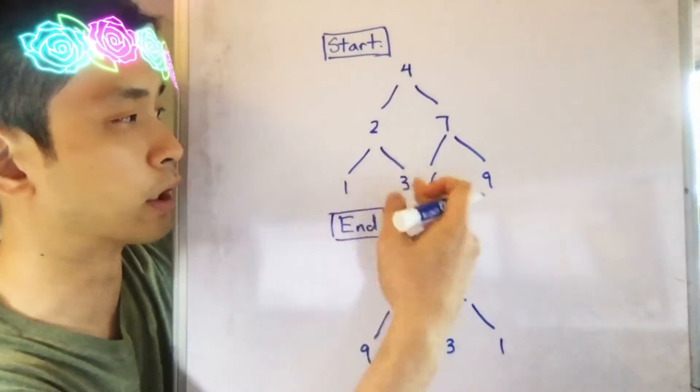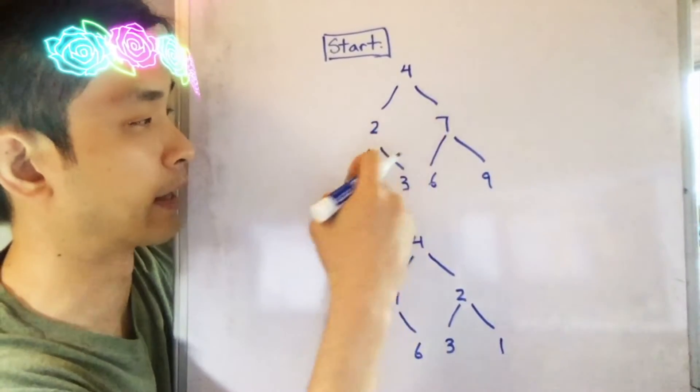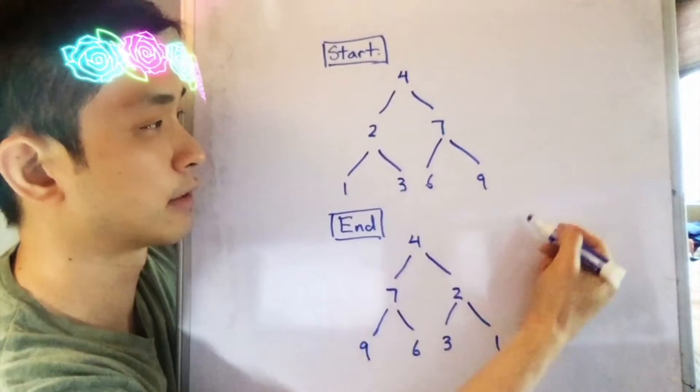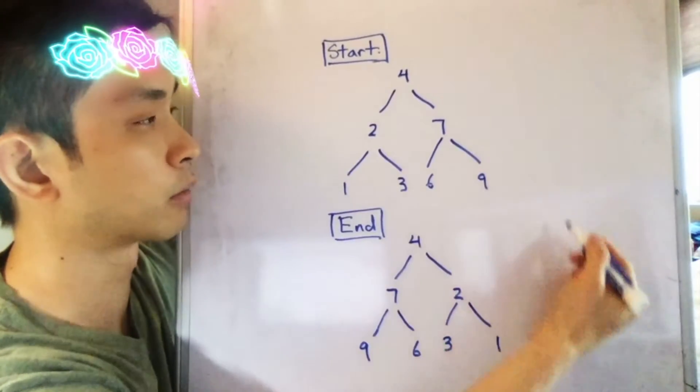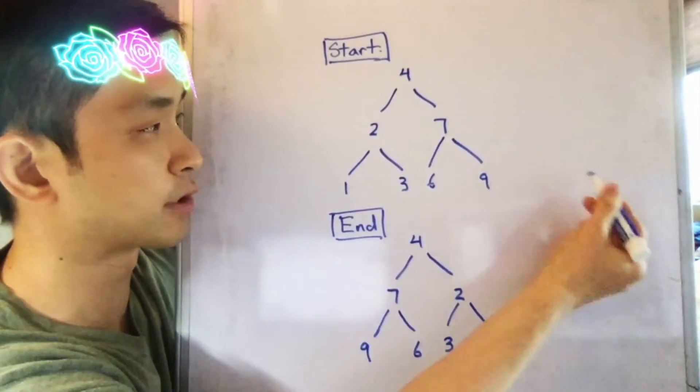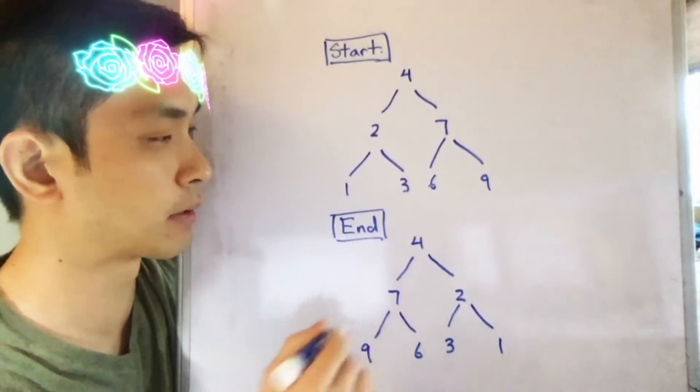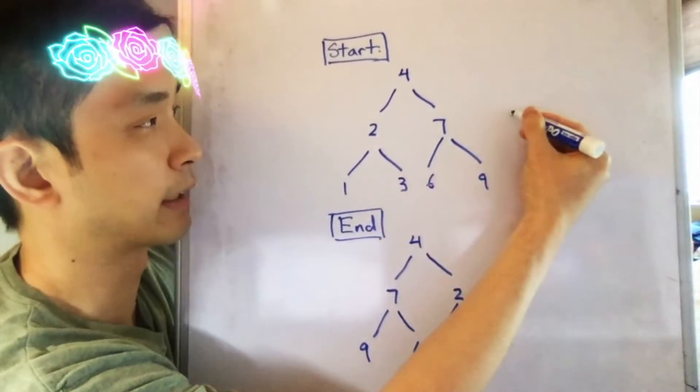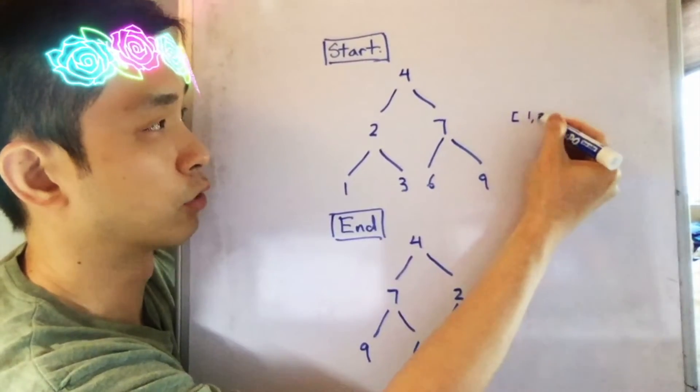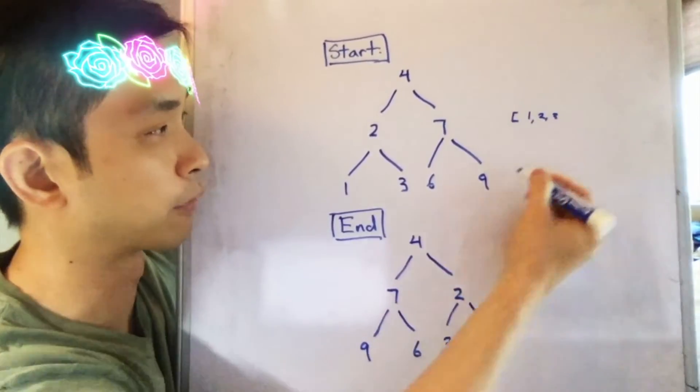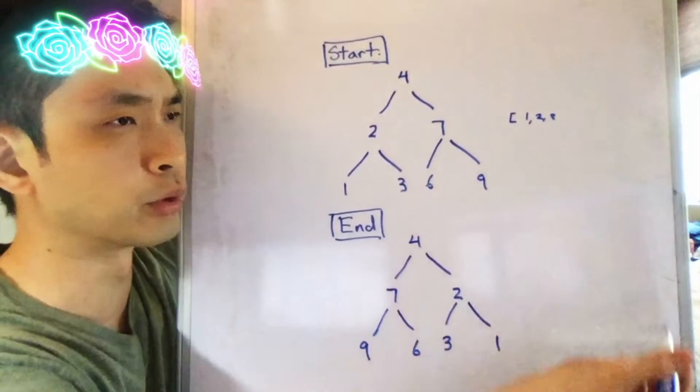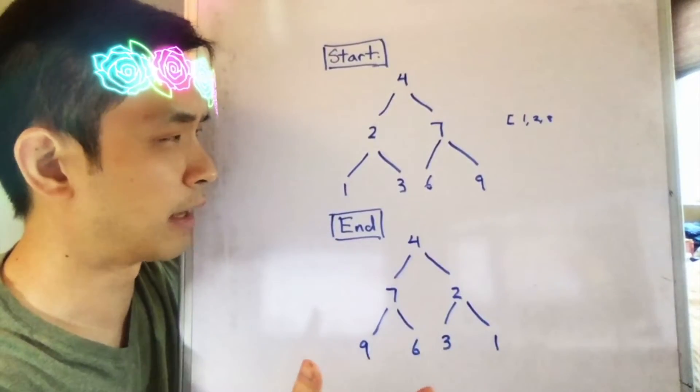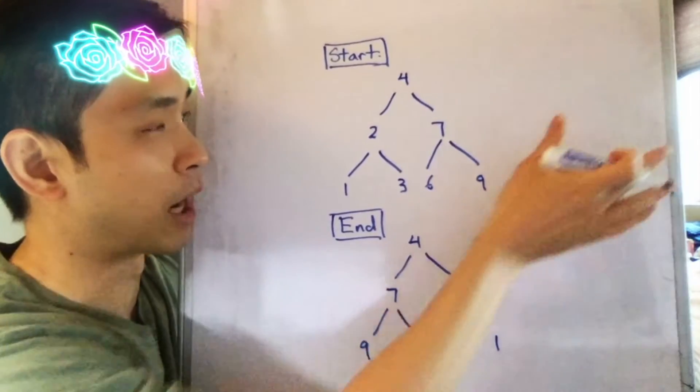So initially I thought well maybe we can do an in-order traversal and go from left node to right and create some sort of list to later traverse backwards and try to regenerate this output tree. But I quickly abandoned that because if we were to create like a list, say like one, two, three or whatever so on and so forth, how are we going to know where the root is? Because we have to build our new tree from the root. And that quickly brought some problems so that didn't work.